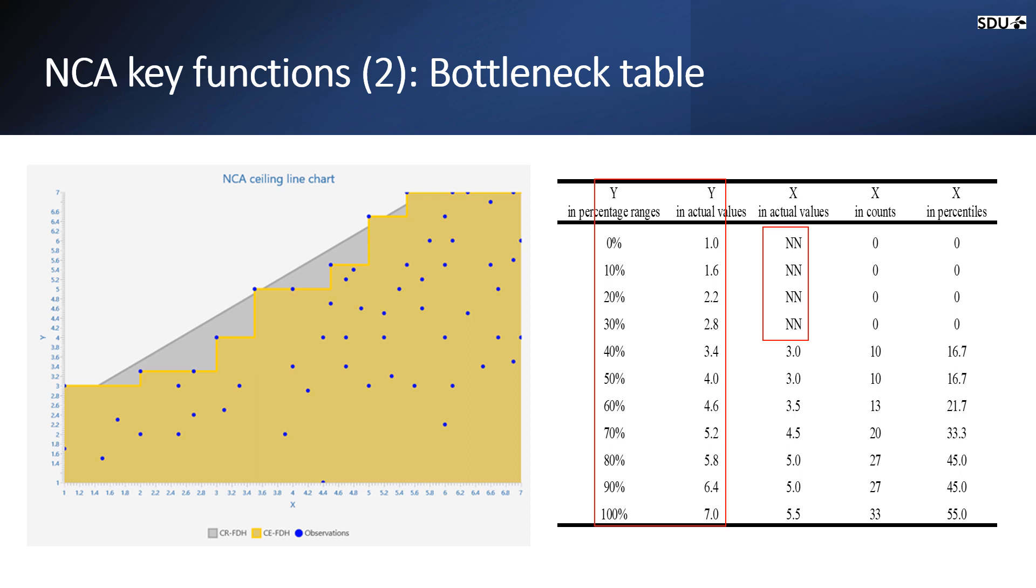This N indicates that the independent variable is not necessary for the level of the dependent variable. For instance, to achieve an outcome level of 50% for Y, which is indicated by an actual value of 4, X needs to be at least a level of 3.